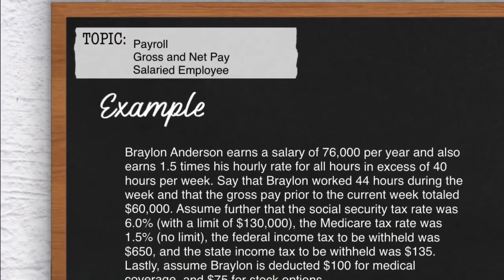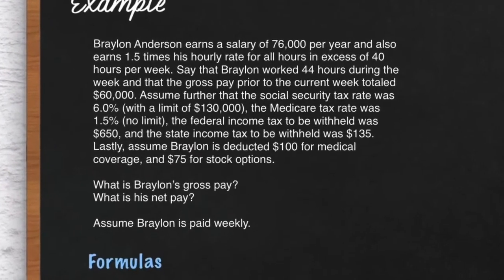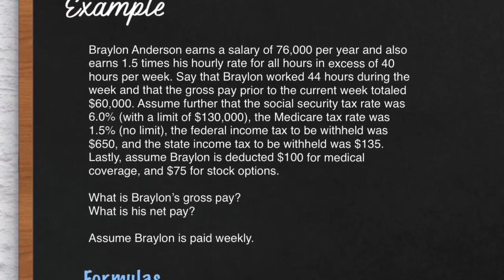Let's discuss a little bit of payroll. In this example, we're going to calculate gross and net pay, but specifically for a salaried employee. Here's our example — it's Braylon Anderson. He earns a salary of $76,000 and earns time and a half on his hourly rate for all hours worked over 40 hours per week.